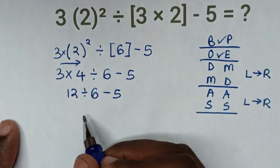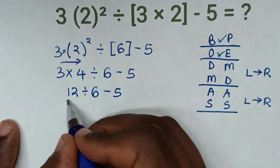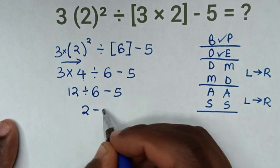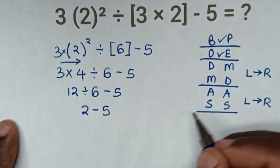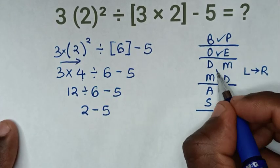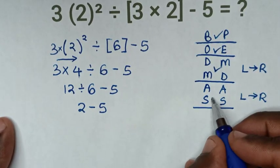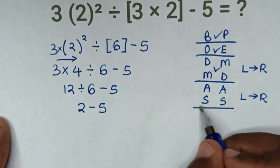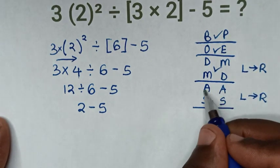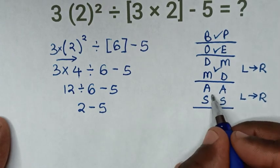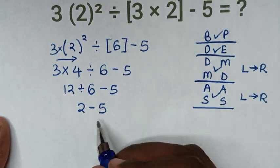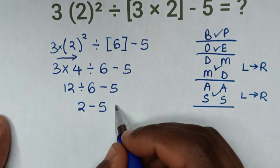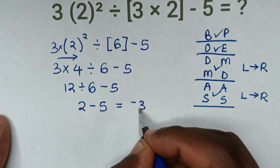Then in the next step, 12 divided by 6 is 2, then minus 5. We finish the multiplication and division step, and now deal with subtraction only — we don't have addition. So subtraction: 2 minus 5 is equal to negative 3.